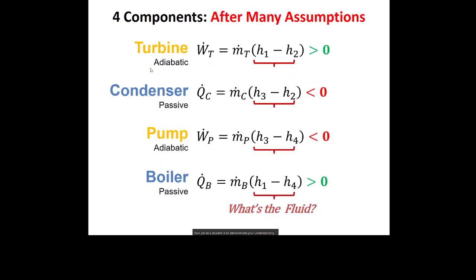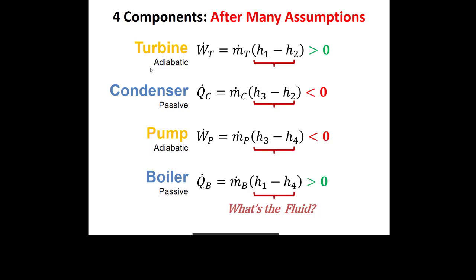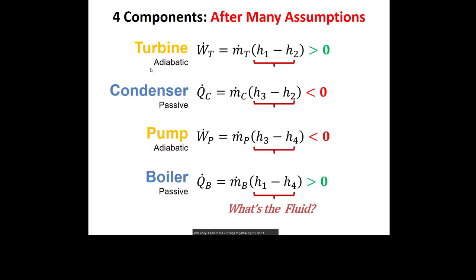For four-component Rankine cycles, the equations we get are: for a turbine or pump, W-dot equals m-dot times (h-in minus h-out), and we let the first law handle the sign. Positive power means producing power like a turbine; negative means consuming power like a pump. When finding net power — the numerator of thermal efficiency — we add those two together. Always check that your net power is less than your turbine power; if it's bigger, you've made an error because the pump power is negative.